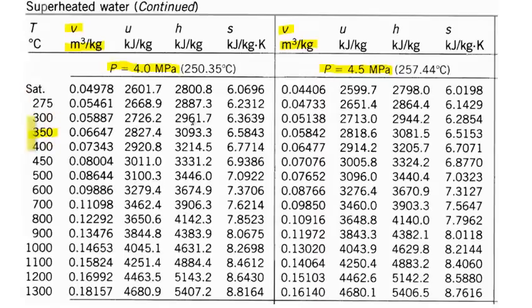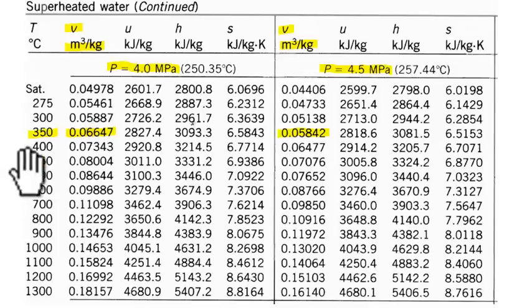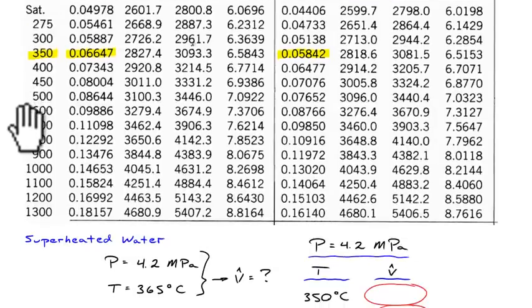From the superheated water table at 350 degrees C: at 4 megapascal the specific volume is 0.06647 cubic meters per kilogram, and at 4.5 megapascal it is 0.05842 cubic meters per kilogram. The first interpolation determines the specific volume at a pressure between 4.0 and 4.5 megapascal — specifically at 4.2 megapascal.